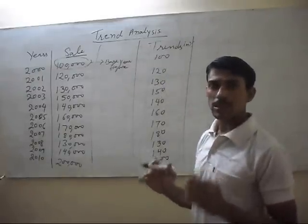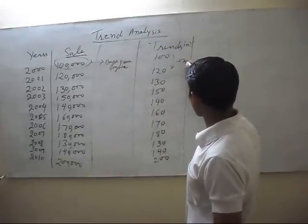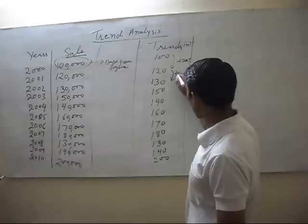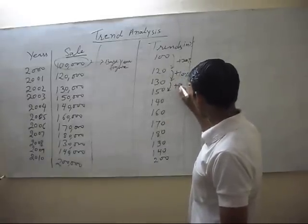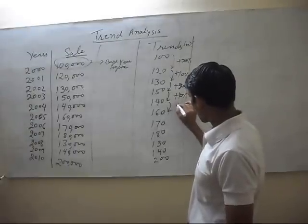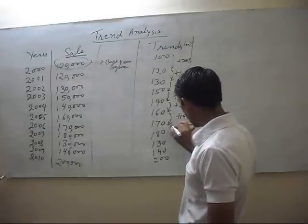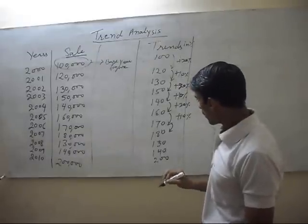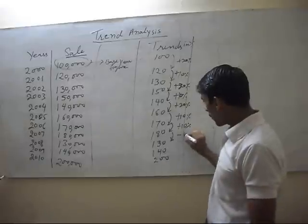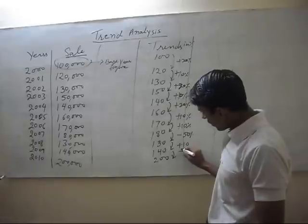Now we can establish our sales trend. This trend shows a 20% increase, then a 10% increase, then a 20% increase, then a 10% increase, then a 20% increase, then a 10% increase, then a 10% increase, then a decrease of 50%, then an increase of 10%, and finally an increase of 60%.